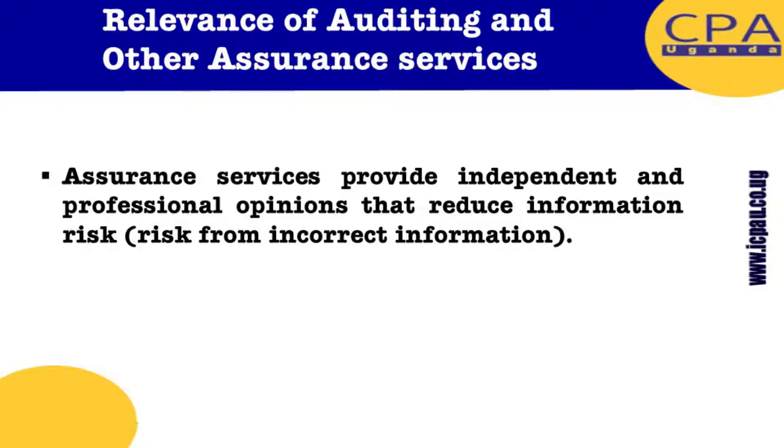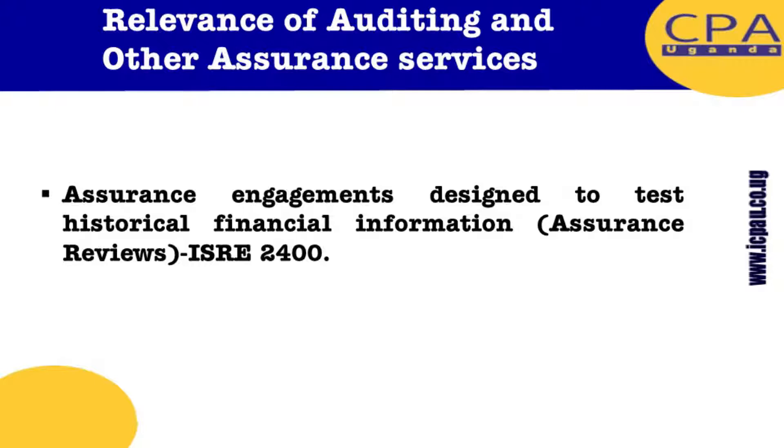Assurance services provide independent and professional opinions that reduce information risk. Assurance engagements as a rule are designed to test historical financial information — that is, you are carrying out an audit of things which have happened in the past. It is more of a post-mortem: right after the patient has died, you go back and see what killed that patient. So auditing is more or less the same — you have to review historical information.